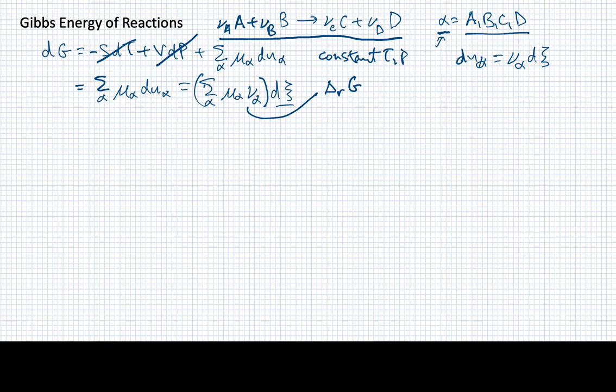This quantity in parentheses we define separately as something called delta sub R G, which was historically called the reaction potential. It may also appear under another symbol in some sources. We're going to stick with this particular symbol for this quantity and will be very interested in it as we move forward.